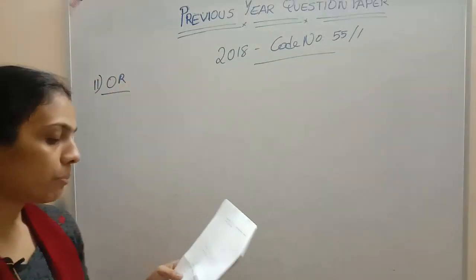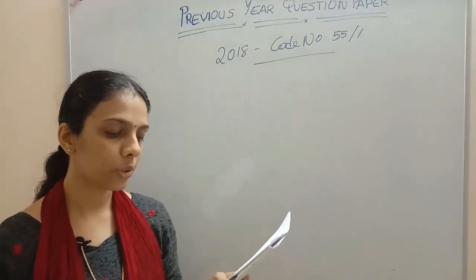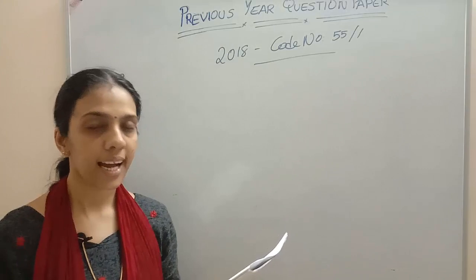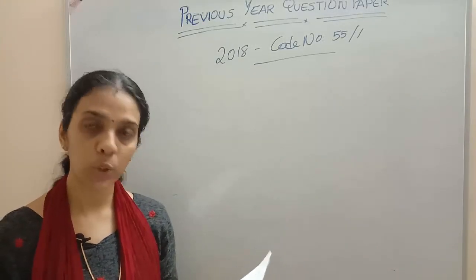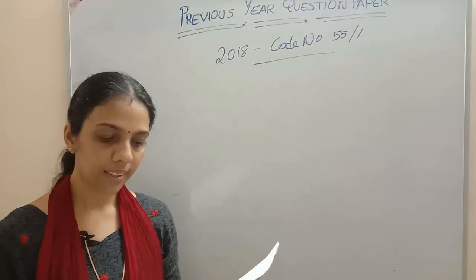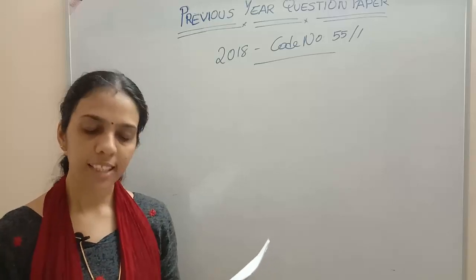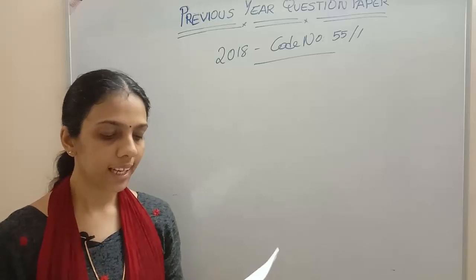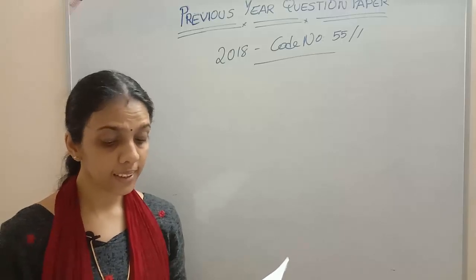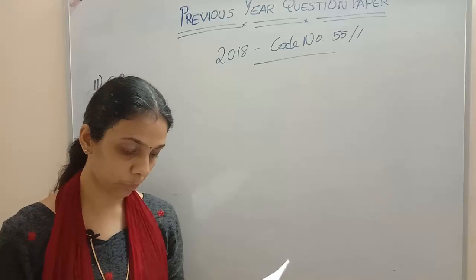Three point charges Q, minus 4Q, and 2Q are placed at the vertices of an equilateral triangle A, B, C of side small l as shown in the figure. Obtain the expression for the magnitude of the resultant electric force acting on the charge Q.